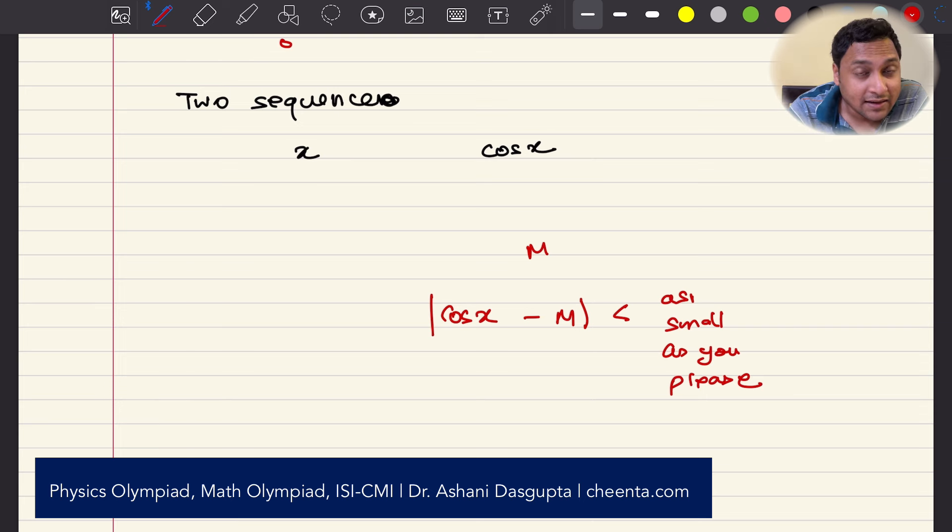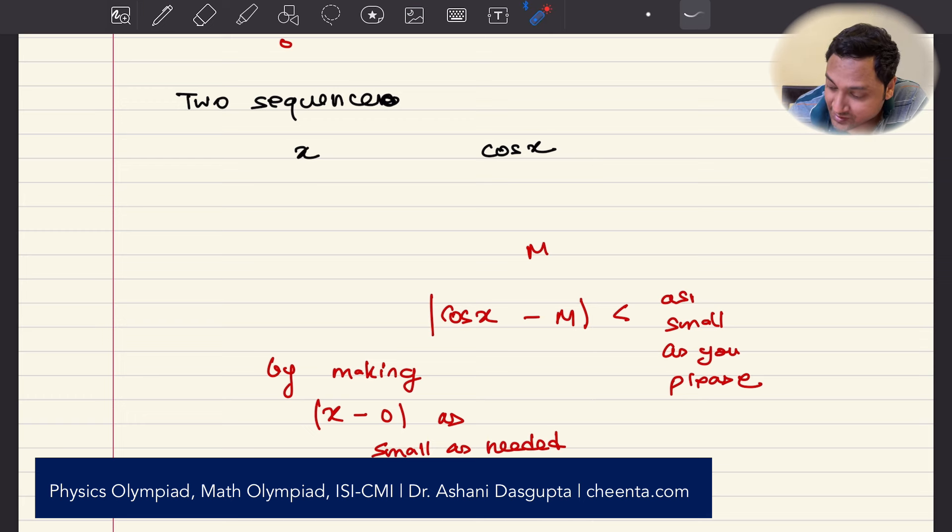What does as small as you please mean? It means that it can be made smaller than any positive number that you want. Now how can you do that? What is your instrument of doing that? Well by making X minus zero as small as needed. So this is like a gain. This number as small as you please, this number is sometimes denoted by epsilon and this number is sometimes denoted by delta.